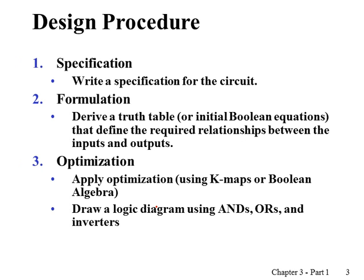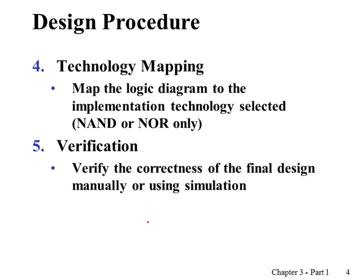In general, the design procedure has several steps. First, we get the specification of the system we are going to design. Based on the specification, in step two we derive a truth table, which is a description of the system toward developing optimized boolean equations. In step three we apply optimization tools learned in earlier chapters, using K-map or, if simple enough, boolean algebra to simplify the equations. Then we draw the logic diagram using AND gates, OR gates, or inverters.